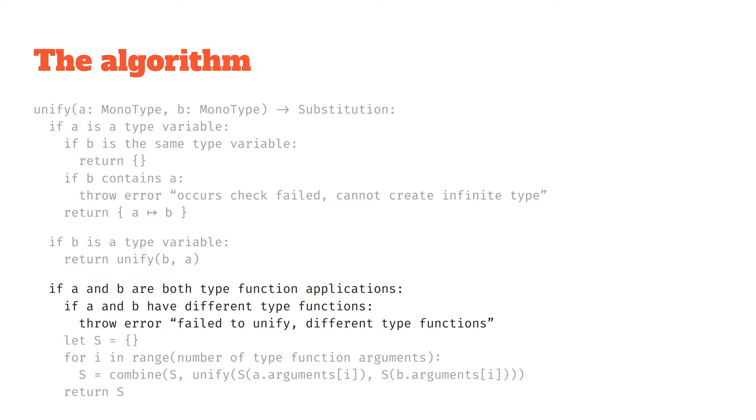So if they're different type functions, so that's the case for example that we saw where one is a list and the other is a function, well in this case they're not going to unify because they're structurally different, and so we throw an error saying, hey these are different type functions. This is maybe an error you might see in a programming language where it says expected a list but received a function, something like that.